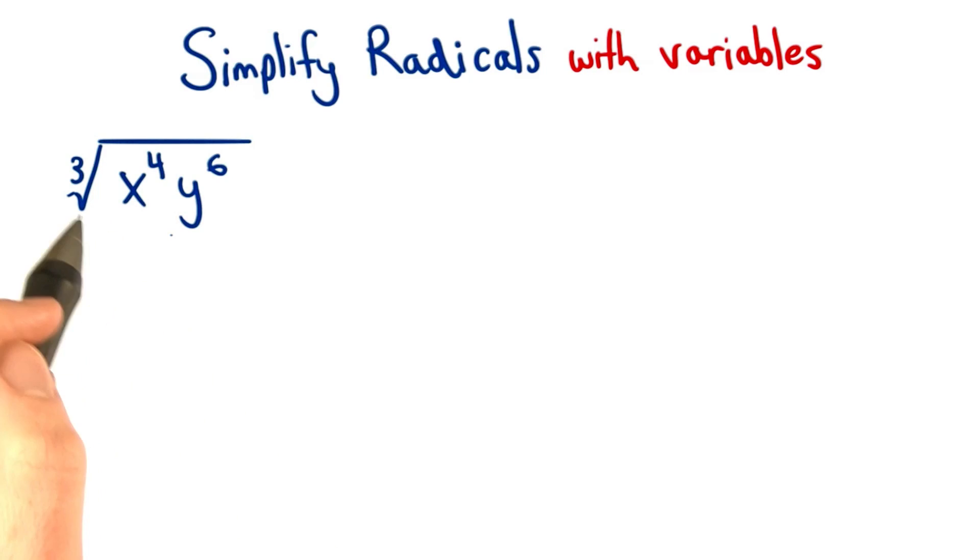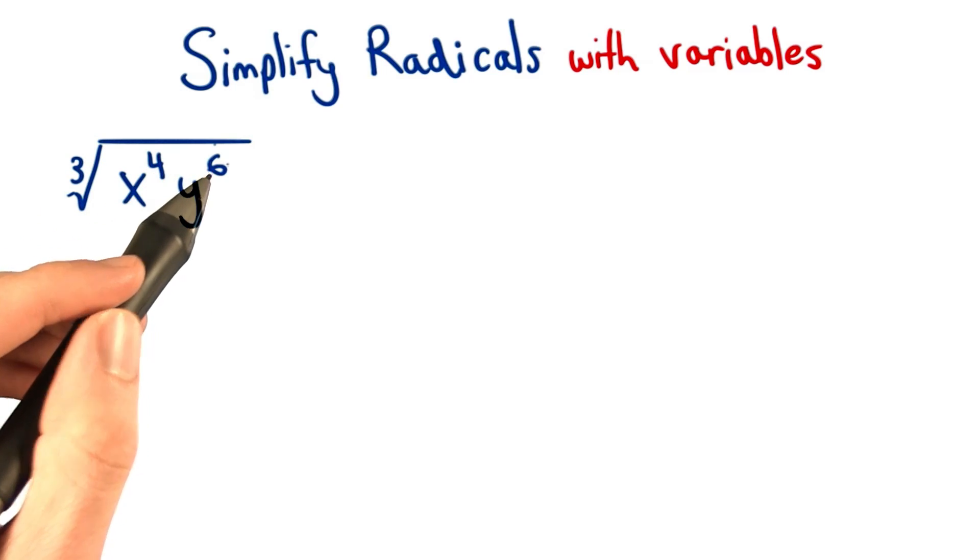Simplifying variables underneath a radical works the same way as it does for factors, or just numbers. We'll look at simplifying the cubed root of x to the fourth times y to the sixth.